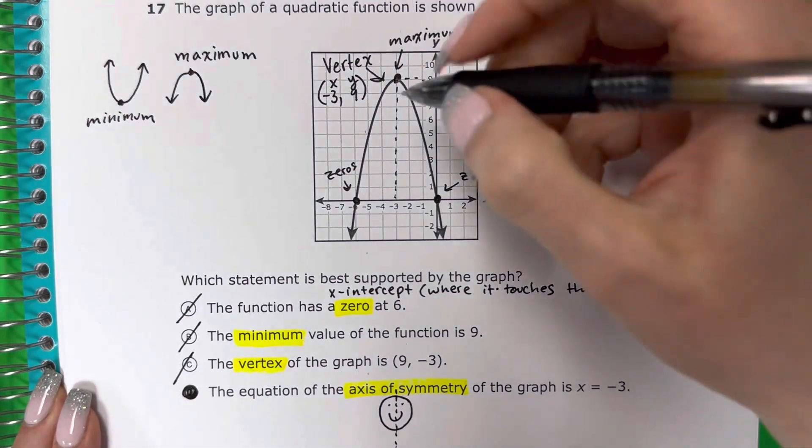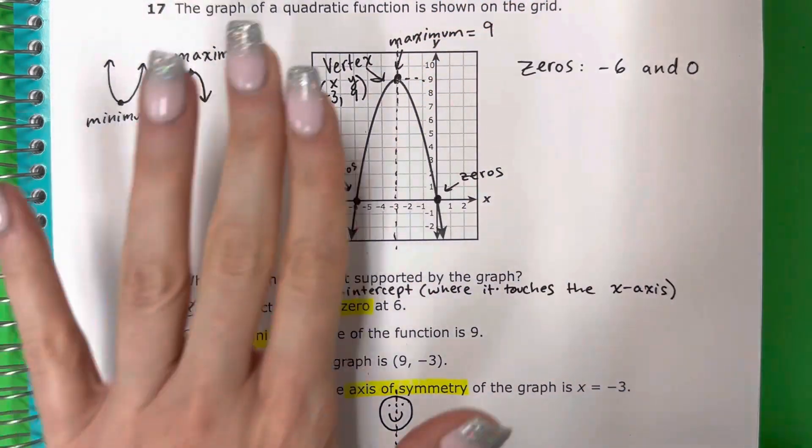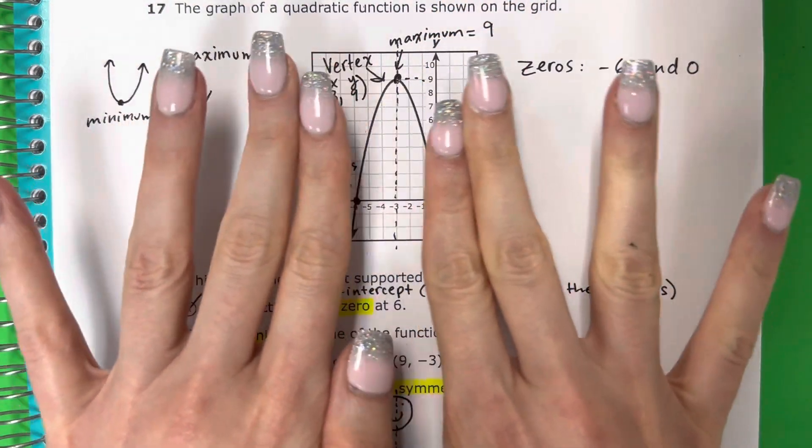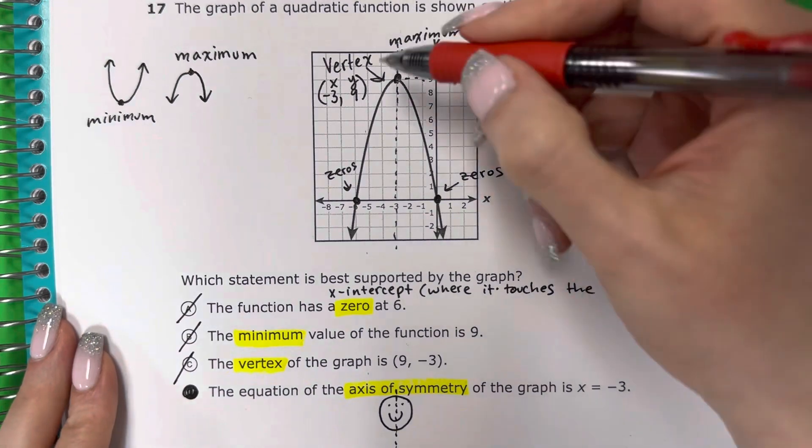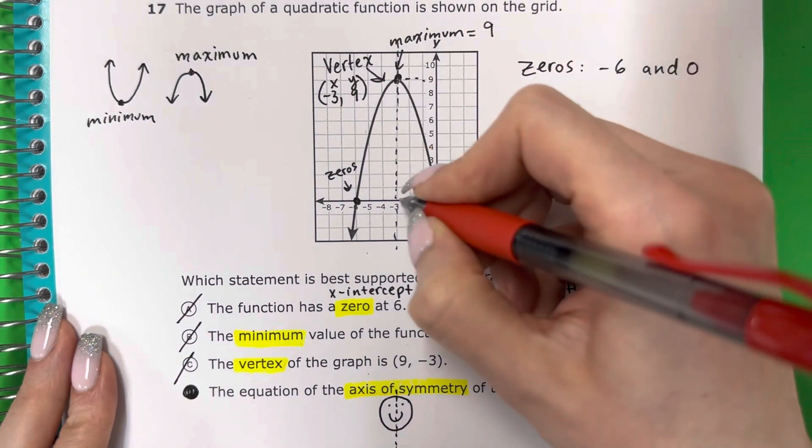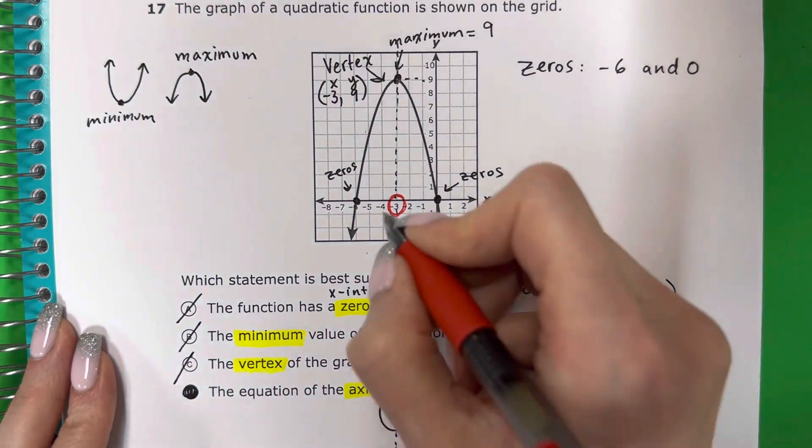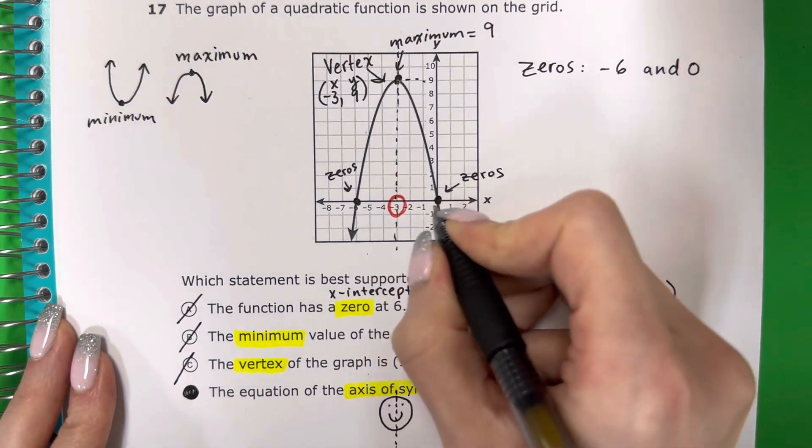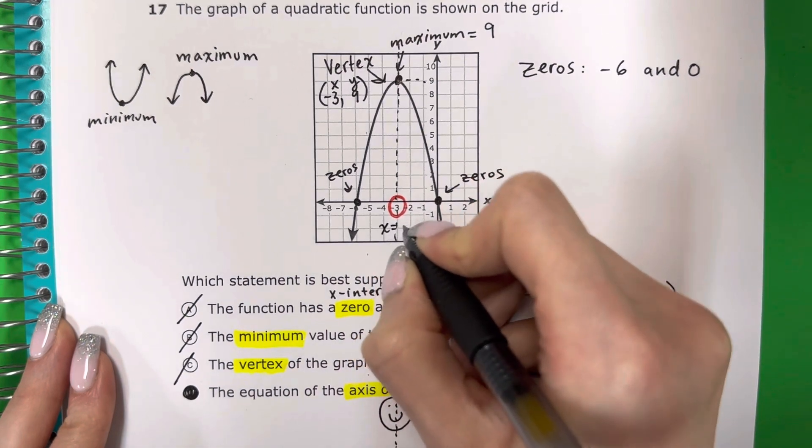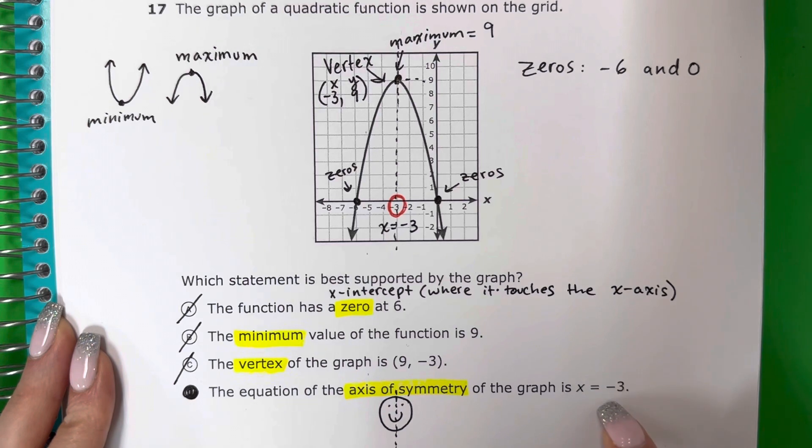So basically I'm going to put a line right in the center of the graph, and the left side and the right side are going to be equal. They're going to be the same. And you're going to see where is this line? Well, it looks like this line touches one number, touches right over there, negative 3. And negative 3 is on which line? It's on X. So this is X equals negative 3. That is the axis of symmetry and that is correct. So D is the correct answer.